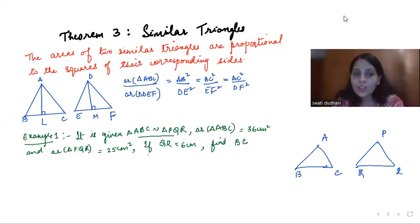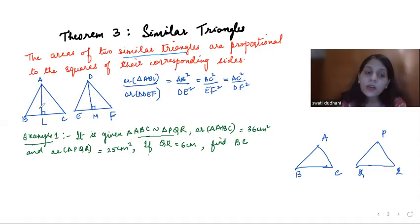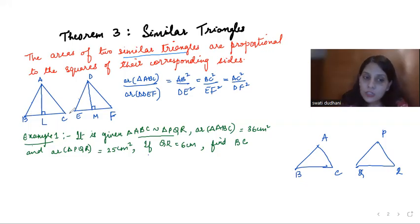Hi, this is Swati and in today's video we'll see Theorem 3 of similar triangles, which is very important. The areas of two similar triangles are proportional to the squares of their corresponding sides. This theorem is applicable only if the triangles are similar — the sides are proportionally divided, and the squares of the sides are proportionally divided. So area of triangle ABC by DEF is equal to AB² by DE², BC² by EF², and AC² by DF².